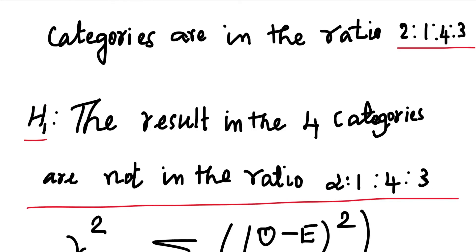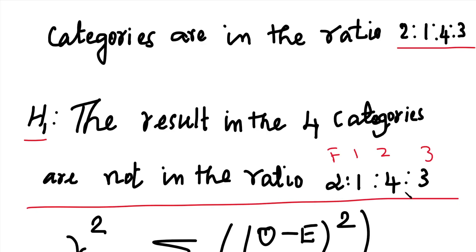So the conclusion is: the result in the 4 categories — fail, first class, second class, third class — out of 1000 students is NOT in the ratio 2:1:4:3. The data do not support the general examination result in this ratio. That is the final answer.